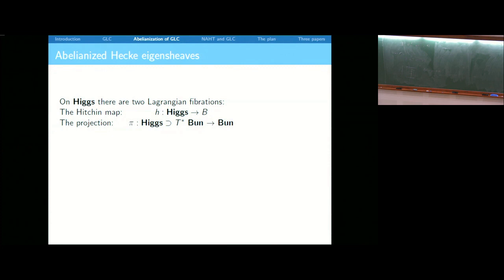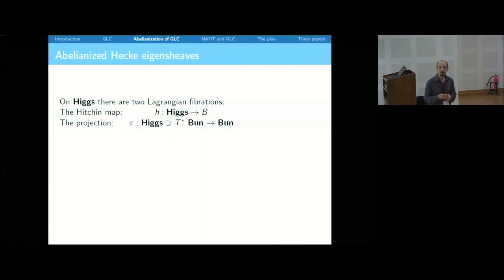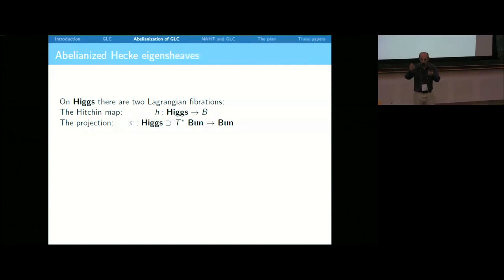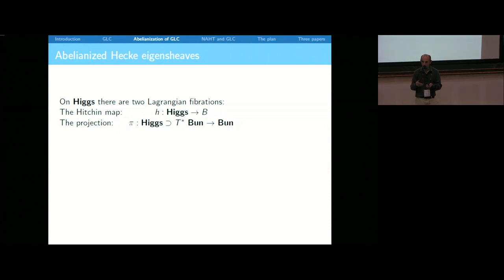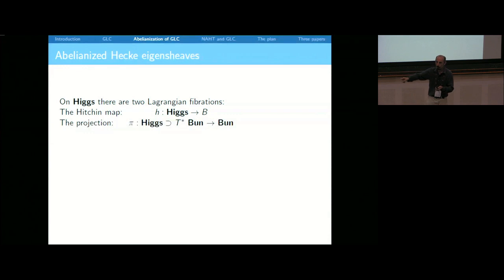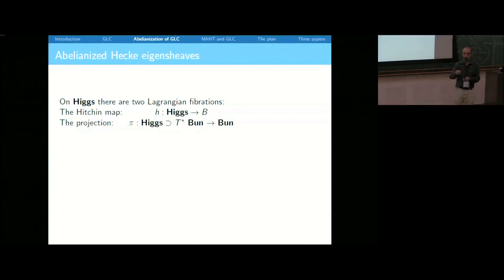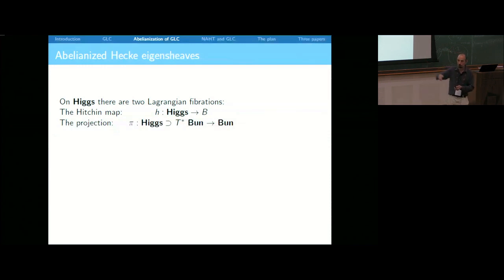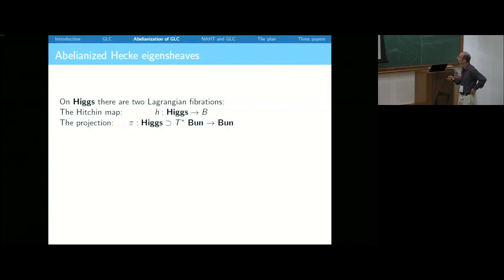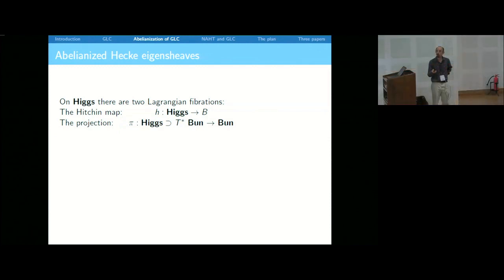If you start with a rank 1 local system and do geometric Langlands, you get a rank 1 local system which restricts under Abel-Jacobi to the one you started with. But if you start with a rank 2 local system, you don't get a rank 2 local system — you get a perverse sheaf, and on the locus where it is a local system, it has rank 2^(3g-3). If you start with a local system of rank R, the expected rank of the sheaf geometric Langlands predicts is the degree of the Hitchin system, i.e., the intersection number of the two Lagrangian fibrations. So the geometry of these two fibrations seems to be a crucial ingredient.